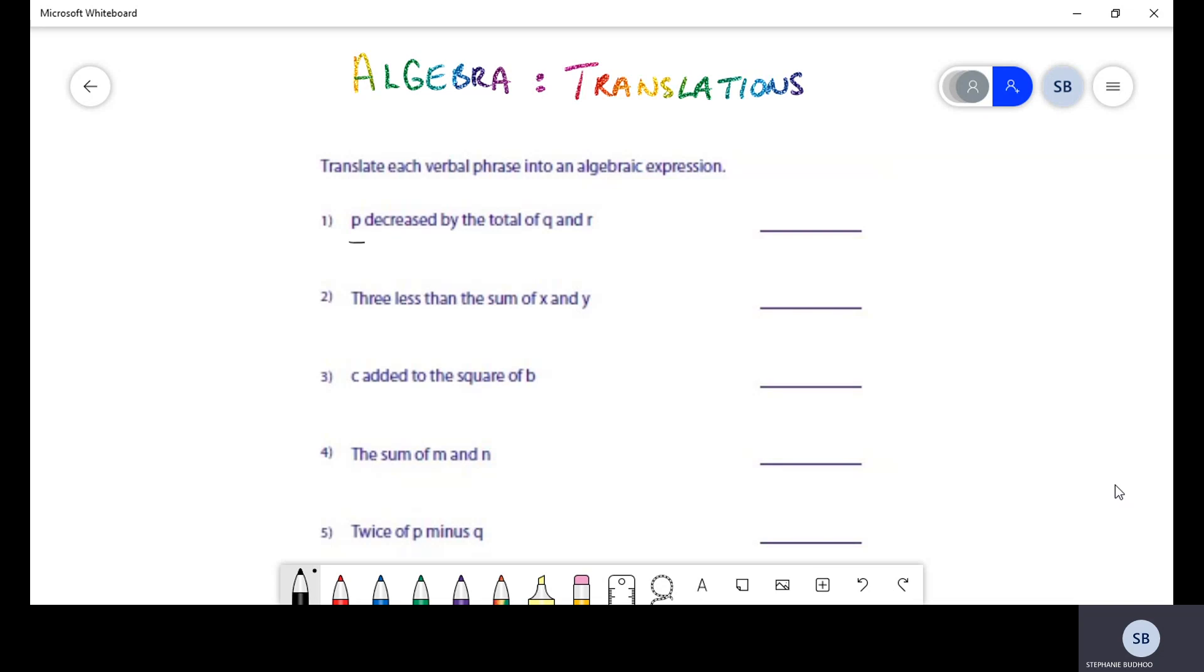Essentially, math is a language. When you have words like you can see on screen here, this is a sentence. It consists of words, a combination of words. The topic algebraic translation deals with changing words into expressions, or algebra expressions rather, into a more concise mathematical way where we don't have so many words. That's what translation is all about.